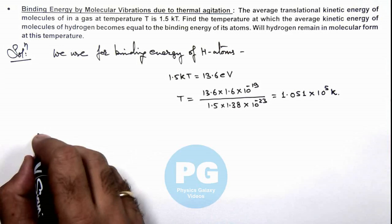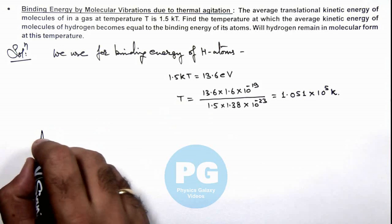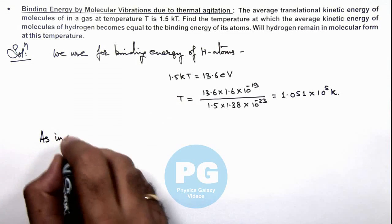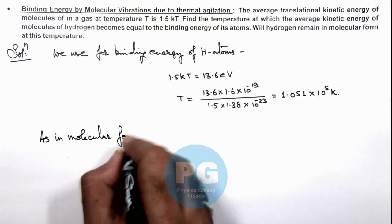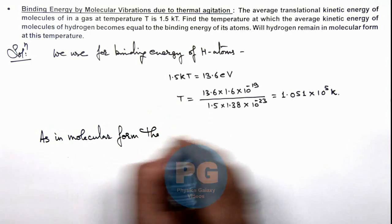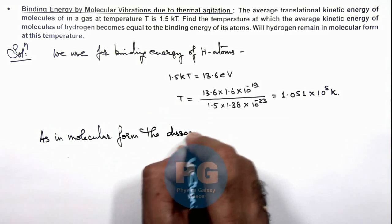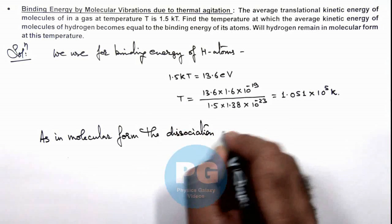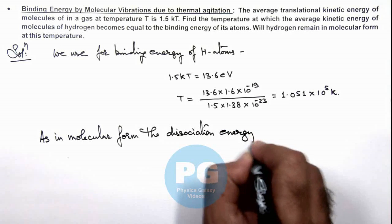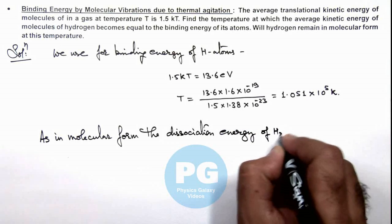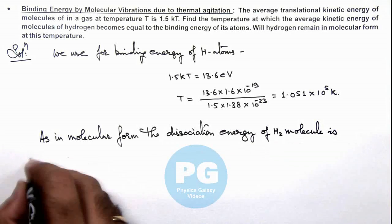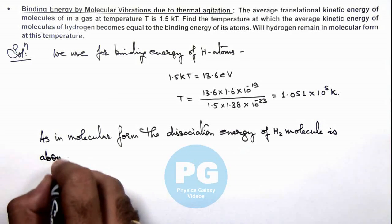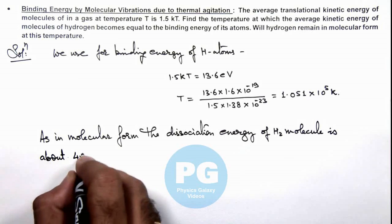And here if we talk about the molecular form, we know as in molecular form, the dissociation energy of hydrogen molecule is about 4.5 electron volt.